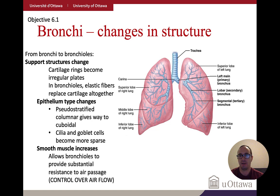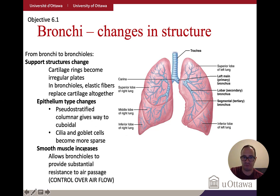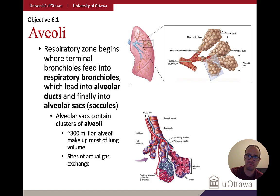As you move down from the trachea toward the terminal bronchioles, the structure changes. At the top, the structure is rich in cartilage, similar to the trachea. Further down, elastic fibers replace the cartilage entirely. The type of epithelium changes as well, and smooth muscle increases toward the bronchioles, allowing greater control over airflow regulation.